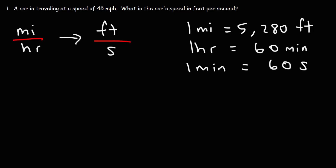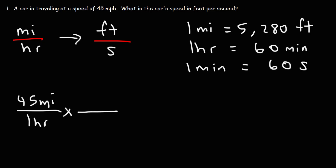Let's start with what we're given: a car traveling at a speed of 45 miles per hour. I'm going to put 45 miles on top and one hour on the bottom. Now let's begin by converting miles to feet. We have the unit miles on top in the first fraction, so we want to put the unit miles on the bottom of the second fraction so that those two units will cancel.